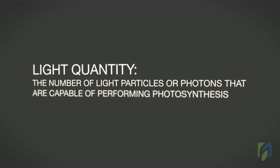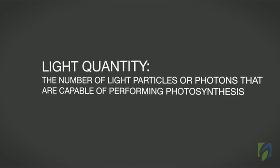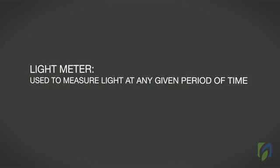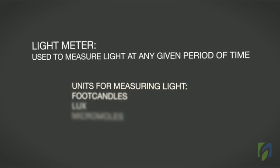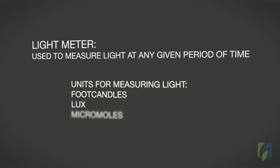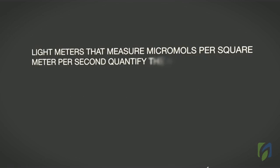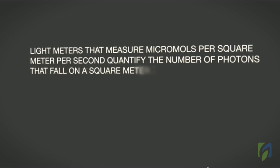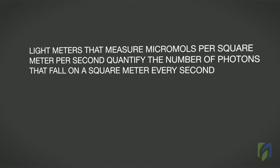Light quantity is the number of light particles, or photons, that are capable of performing photosynthesis. A light meter can be used to measure light at any given period of time. Some of the different units for measuring light include foot candles, lux, and micromoles per square meter per second. Light meters that measure micromoles per square meter per second quantify the number of photons that fall on a square meter every second. All of these measurements of light are instantaneous readings.